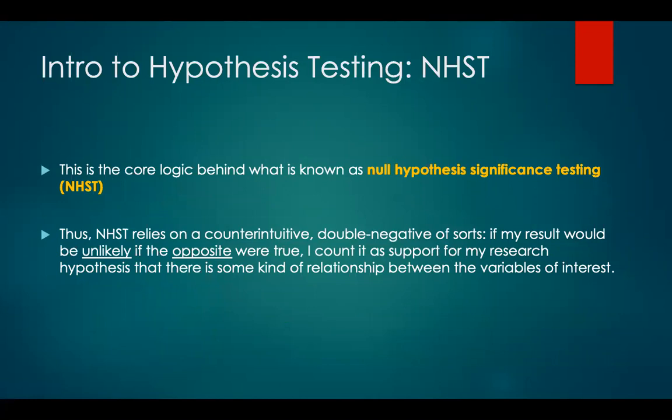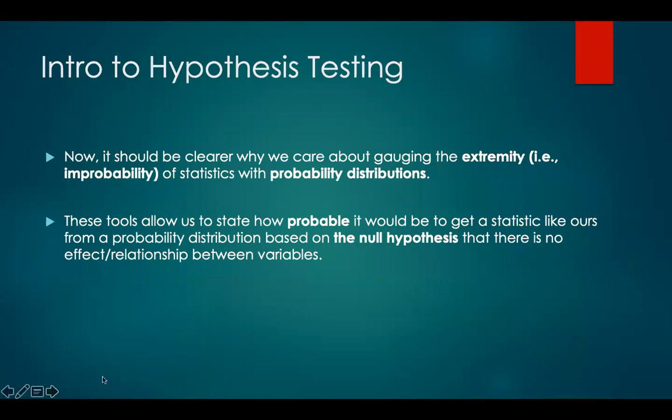NHST relies on a counterintuitive double negative of sorts: if my result would be unlikely if the opposite of my hypothesis were true, it counts as support for my research hypothesis that there is some kind of relationship between these variables of interest. This is why we care so much about gauging the extremity or improbability of statistics with probability distributions, because these tools allow us to state how probable it would be to get a statistic like ours from a probability distribution based on this null hypothesis — the hypothesis that there really is no effect or relationship between variables.